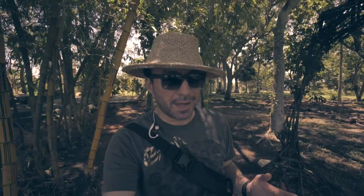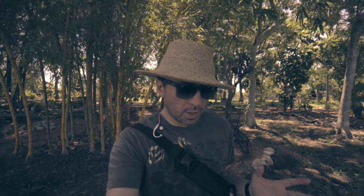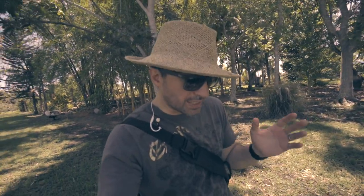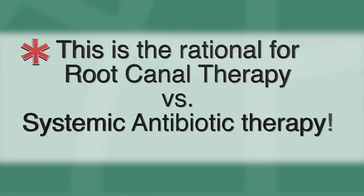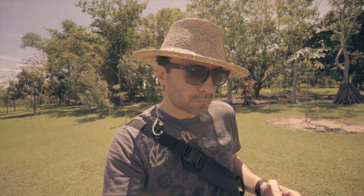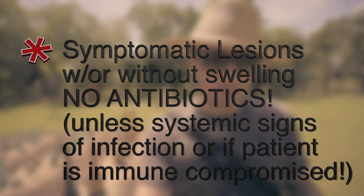Proper root canal therapy has a much better chance of removing the source of infection — the bacteria in the root canal. Any patient with an intact immune system can address the bacteria outside the root canal once the source has been eliminated through chemo-mechanical instrumentation. That is the rationale for root canal therapy over antibiotic therapy. Symptomatic apical periodontitis with a lesion or even some swelling only warrants antibiotics if the patient is immunocompromised or the infection is systemic.